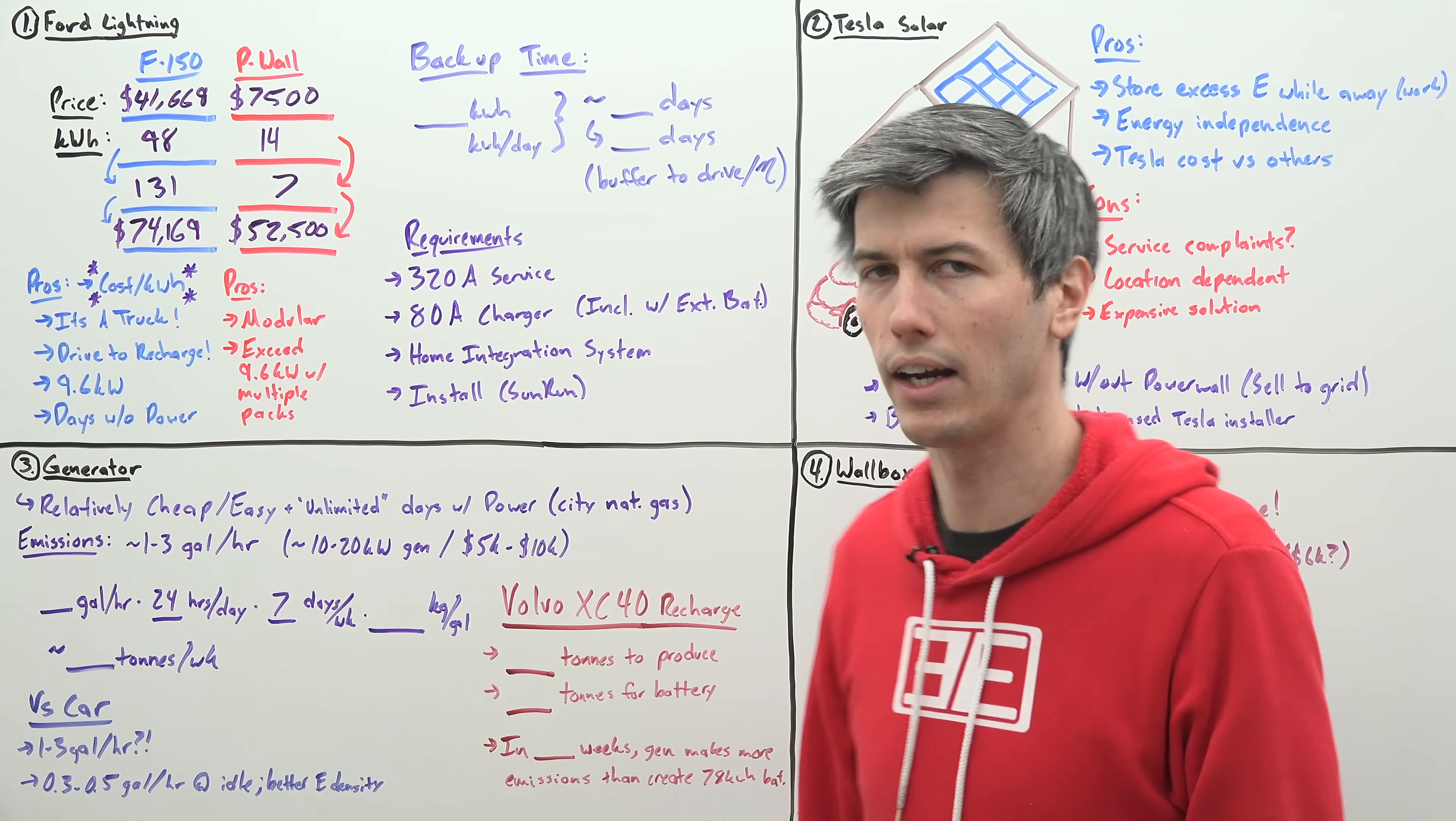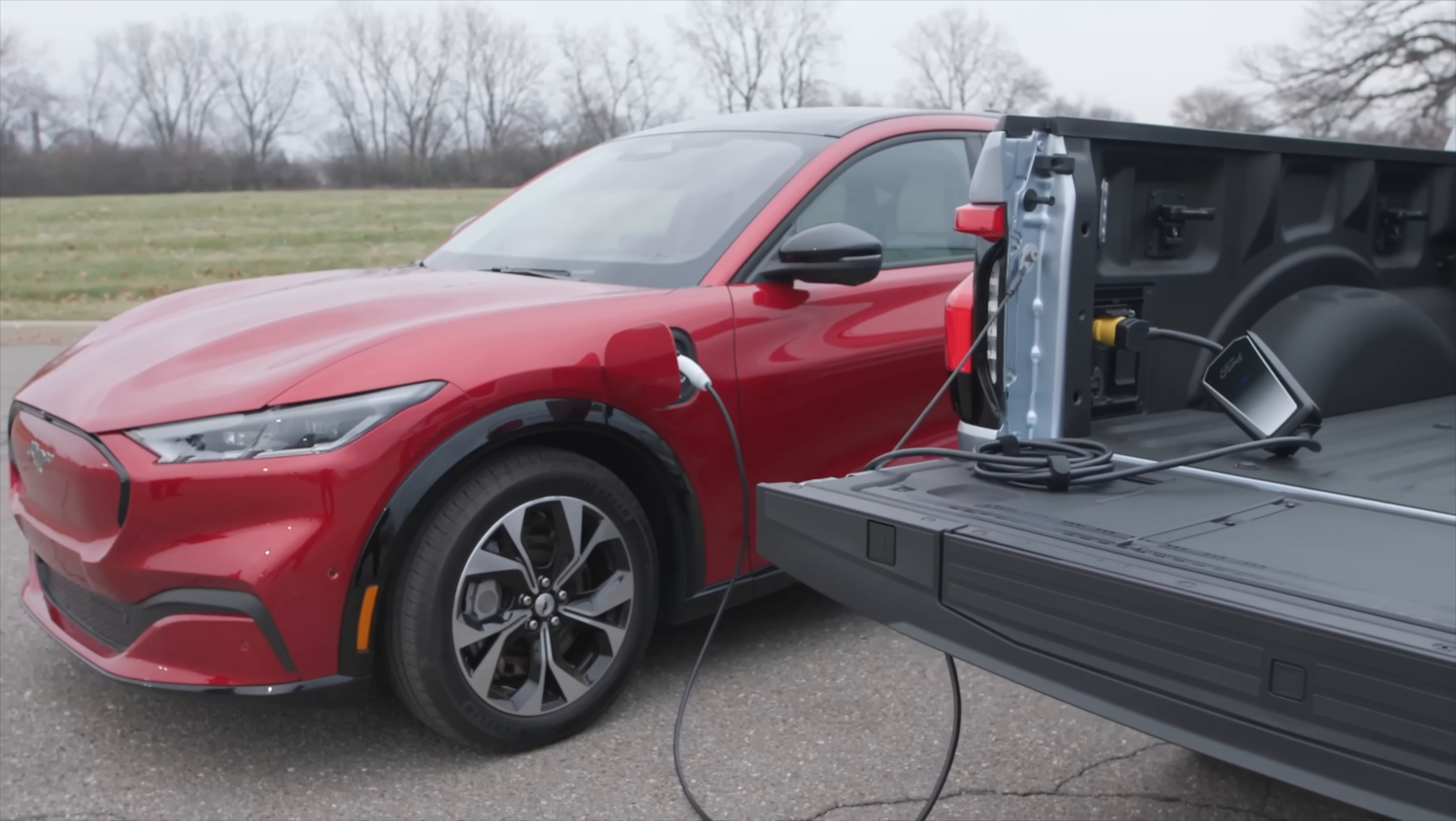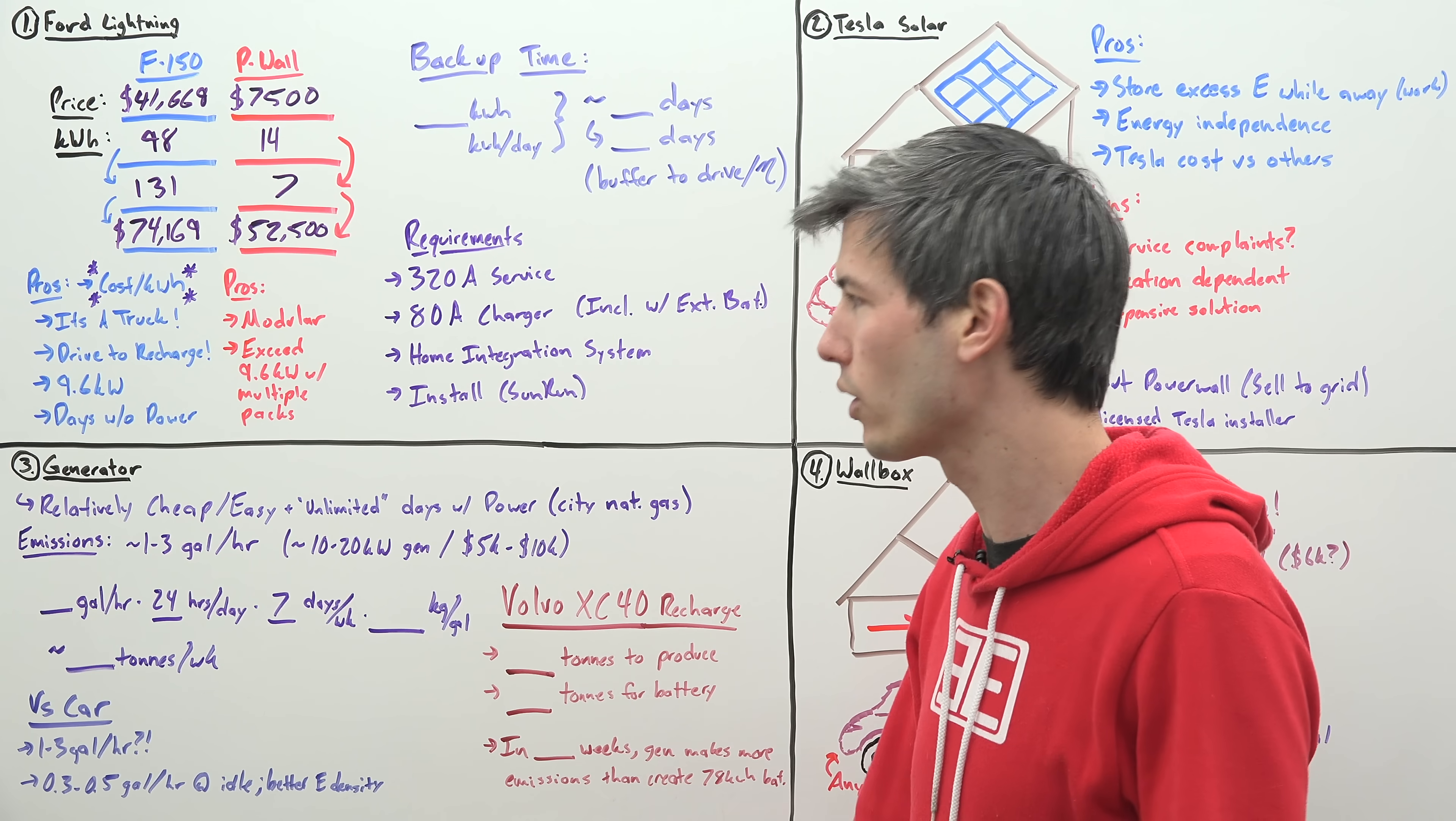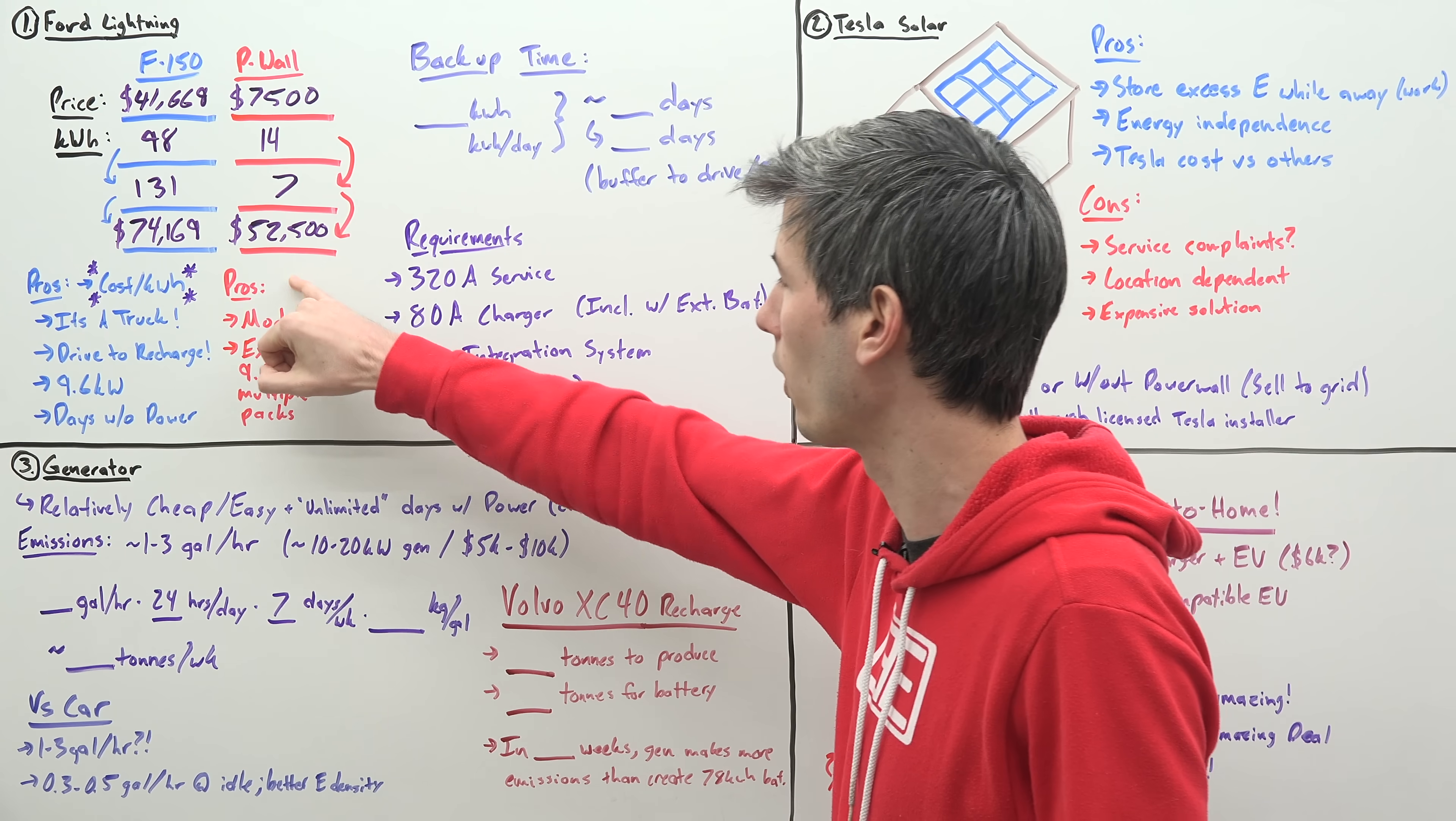You don't have that option with a Tesla Powerwall. Your output for this system from the truck to your house is 9.6 kilowatts. That's pretty good. Pretty high amount of power draw. And you can go days without power. So as far as calculating how much, we'll get into that in a moment.